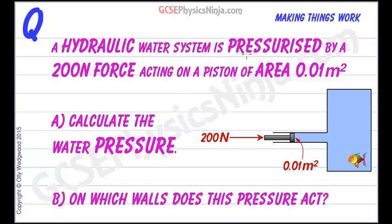A hydraulic water system is pressurized by a 200N force acting on a piston of area 0.01m². First of all we need to calculate the water pressure that's caused by this force acting on this area and then answer on which walls does this pressure act.